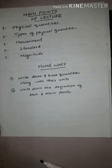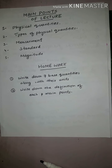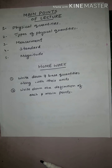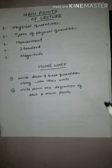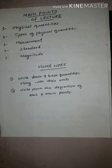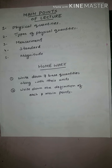Now for homework: first, write down the seven base quantities along with their units and symbols in table form, as I showed you in the lecture. It is given on page 95 of your book. Second, write down the definitions of each main point — physical quantity, types of physical quantity, measurement, standard, and magnitude. Write the proper definitions as I dictated. This is your homework.